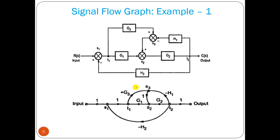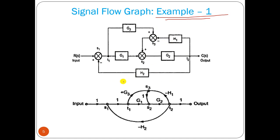We have solved around 8 problems in the last lecture. Let us take another example. After that I will solve another type of problem. This is a problem where from a block diagram we can draw the signal flow graph. This is a very complicated block diagram — we have two summation points here.